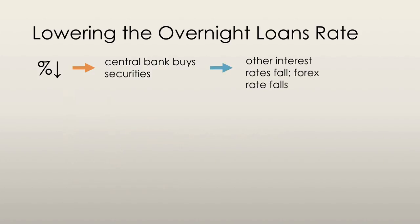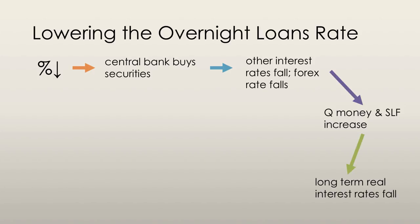Once the overnight loans rate falls, other interest rates and the foreign exchange rate fall as well. The supply of loanable funds increases and so does the quantity of money in the economy. This is followed by a fall in long-term real interest rates. The fall in all these interest rates induces an increase in consumption and investment.